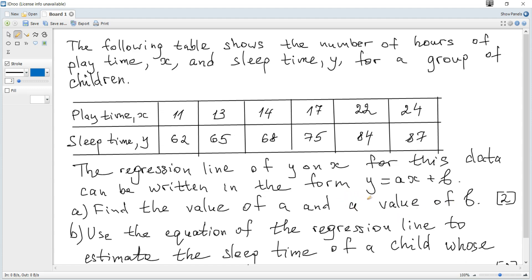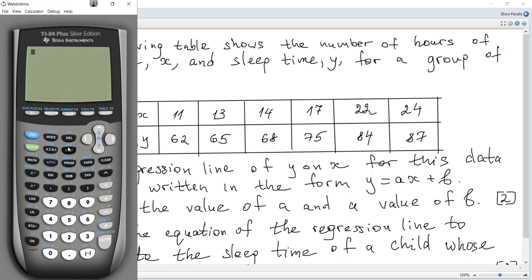Since it's y on x regression line, x is independent or explanatory variable, y is dependent or response variable. And how to do that? We choose stat, edit and let L1 be x and L2 be y and L3 all.